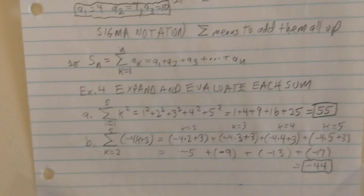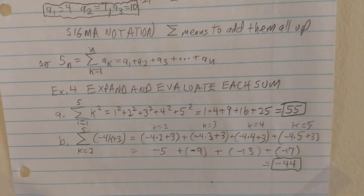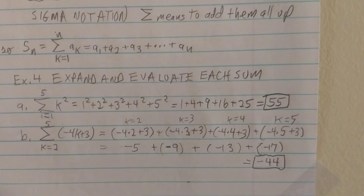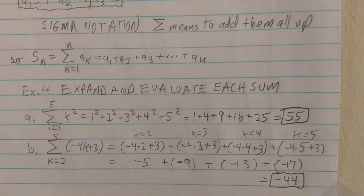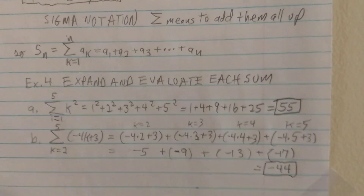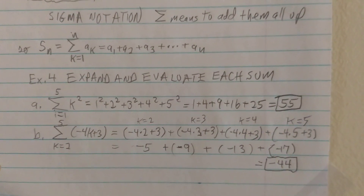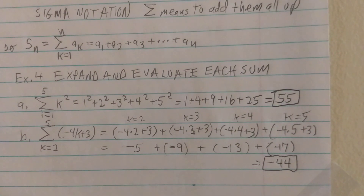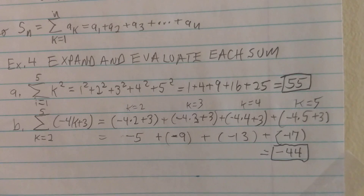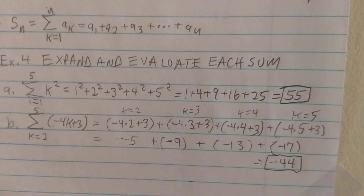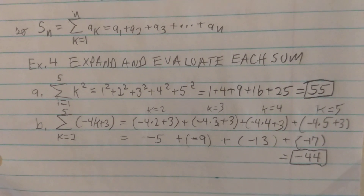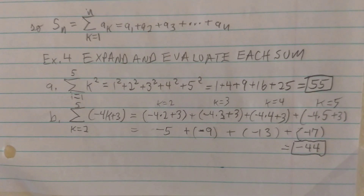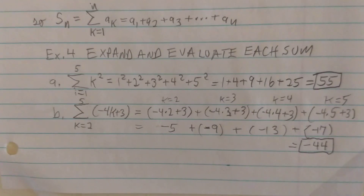Sigma notation uses the capital sigma from the Greek alphabet. In math it means to add up all the sequence elements. So S sub n becomes the summation from k equals 1 to k equals n of a sub k, which is shorthand for a sub 1 plus a sub 2 plus a sub 3 plus dot dot dot all the way up to the last term a sub n.